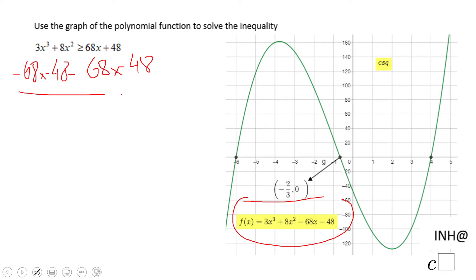We get something very interesting: 3x³ + 8x² - 68x - 48 greater than or equal to 0. So we did have to get that 0 on the right side, and if you notice...